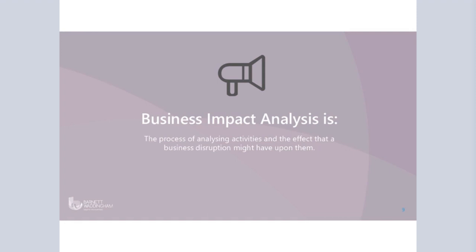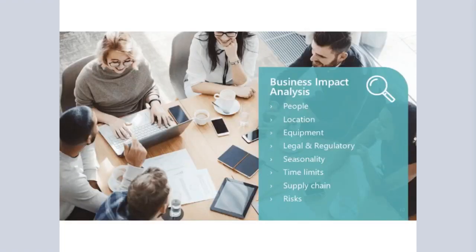Let's look at business impact analysis. Assuming you have some kind of senior management buy-in to the business continuity management process, one of the first things you'll need to do is understand what key activities are essential to keep your organisation running — whether that's parts of your manufacturing process or delivering goods and services to clients. Once you've got that list, you need to talk to the people who run those processes, as they will know them inside out. You'll need to ask them questions such as: how many people will you need to carry out this activity if something happened? Where can you carry it out — can you do it from an alternative site?